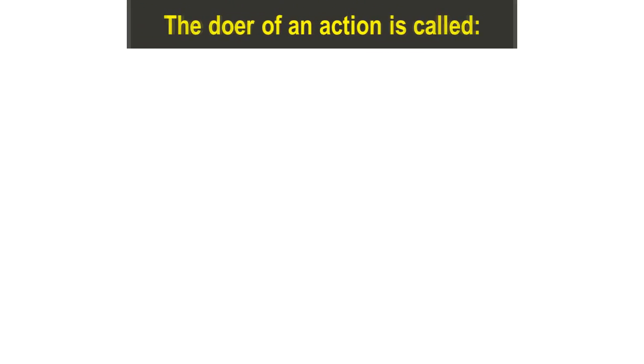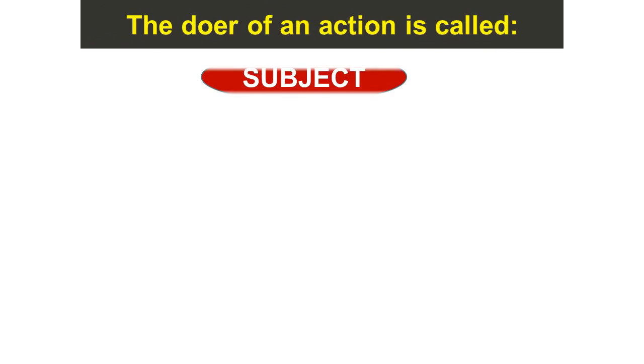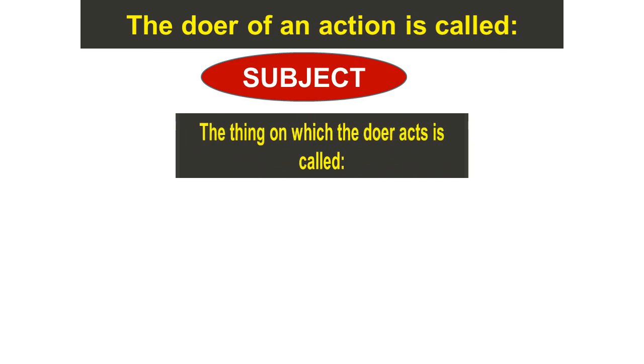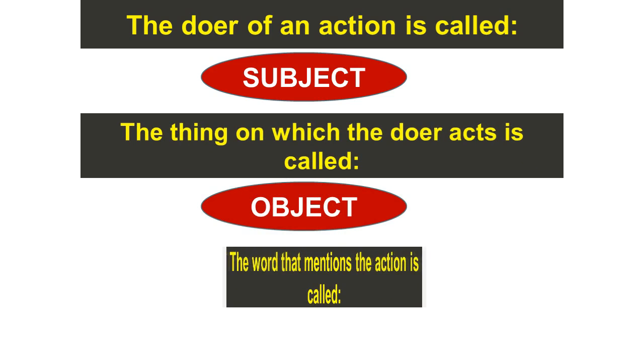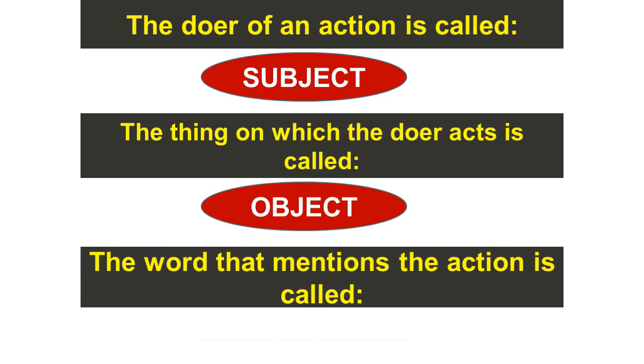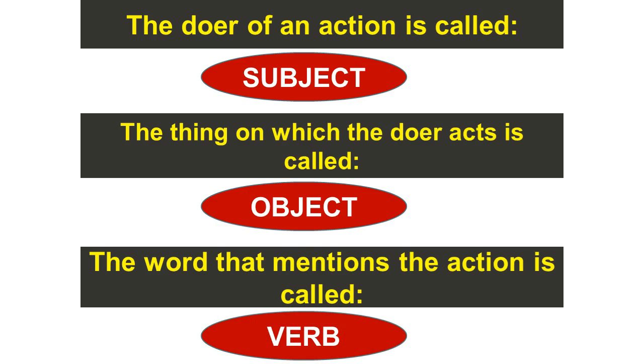The doer of an action is called subject. The thing on which the doer acts is called object. The word that mentions the action is called verb.